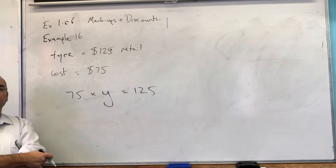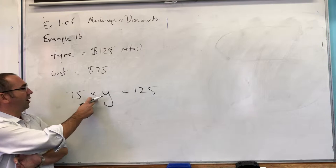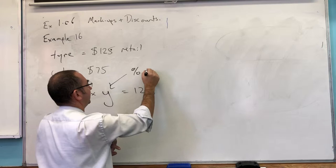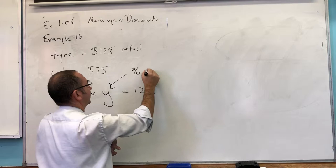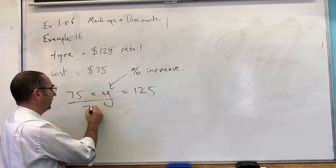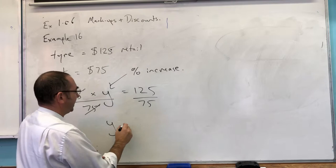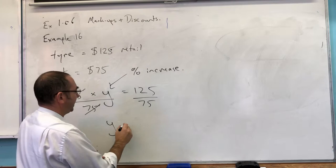I've got 75 lots of Y, which is my currently unknown percentage increase. I've got 75 lots of Y and I only want one lot of Y. So I'm going to divide both sides by 75. The 75's cancel. So the percentage increase as a decimal will be 125 divided by 75.